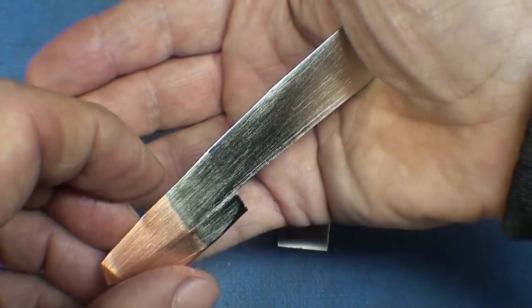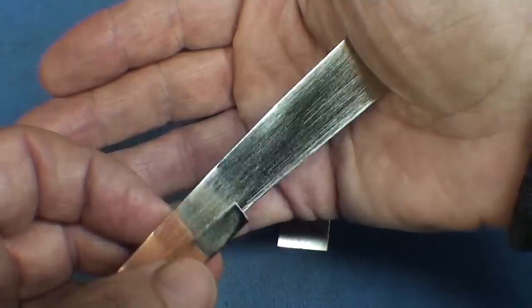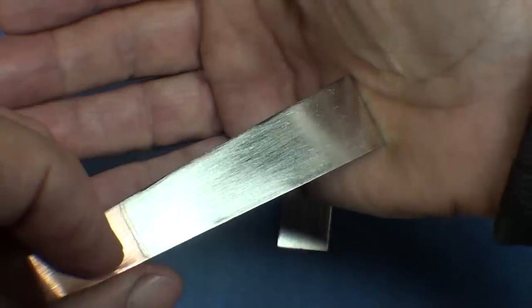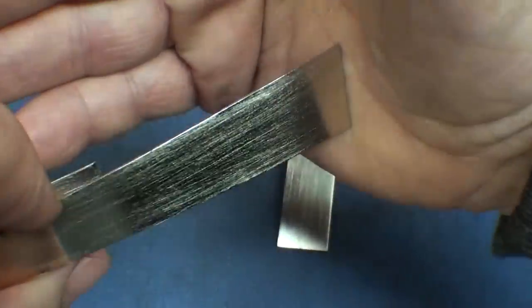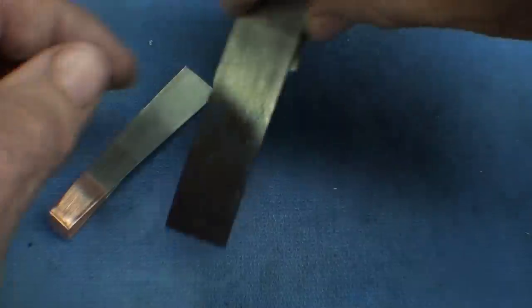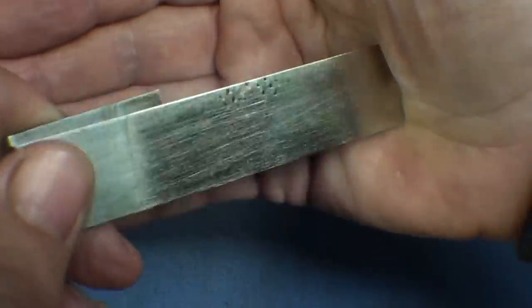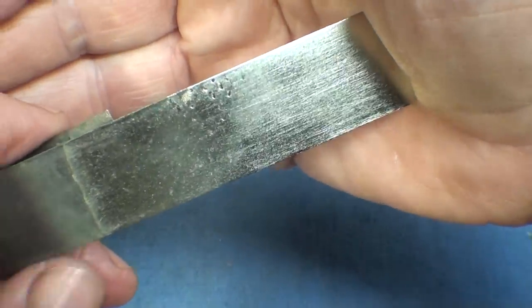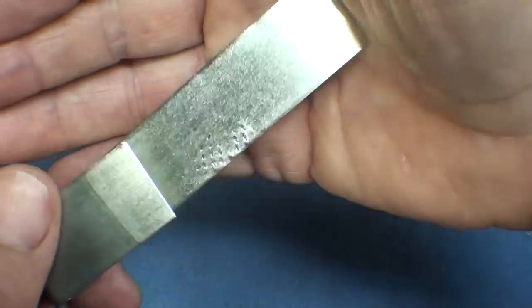He also had a Colt 380 automatic, semi-automatic, nickel plated, and I prefer the nickel plated pistols over the blue. Now you're seeing stainless steel. And here's the steel. Now since this was successful, I'm going to go ahead with the second part of the experiment—to nickel plate this.